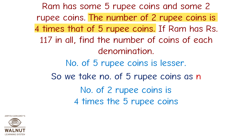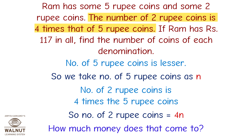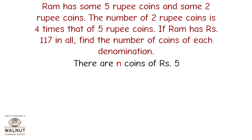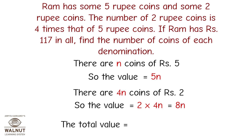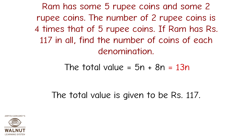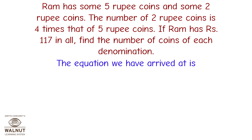The number of 2-rupee coins is 4 times the 5-rupee coins, so the number of 2-rupee coins is 4n. There are n coins of rupees 5, so the value is 5n. There are 4n coins of rupees 2, so the value is 2 into 4n, which equals 8n. Therefore the total value equals 5n plus 8n, which equals 13n.